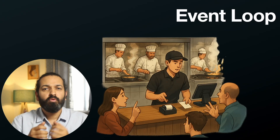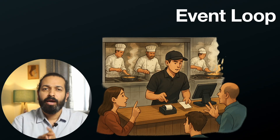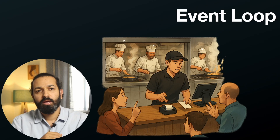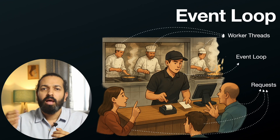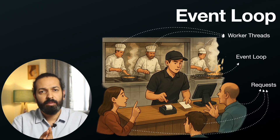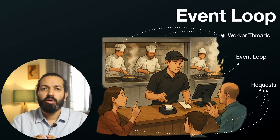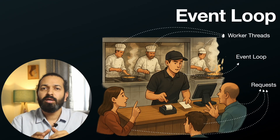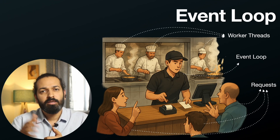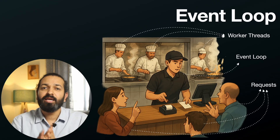Imagine a busy restaurant. You walk in, there's one guy at the counter taking orders. Behind him, there are multiple chefs in the kitchen. This counter guy is your event loop and the chefs are your worker threads. Customers come with simple requests — the counter guy answers immediately, no need to go to the kitchen. For a big order like pizza for 50 people, the counter guy doesn't start cooking — he prints the order, passes it to the kitchen, and immediately turns to the next customer. The counter guy never blocks, never stands idle waiting for the kitchen to finish. He keeps the line moving. When the kitchen finishes, they ring a bell, the counter guy gets notified, and calls the customer to collect their order. This is exactly how event loops work.